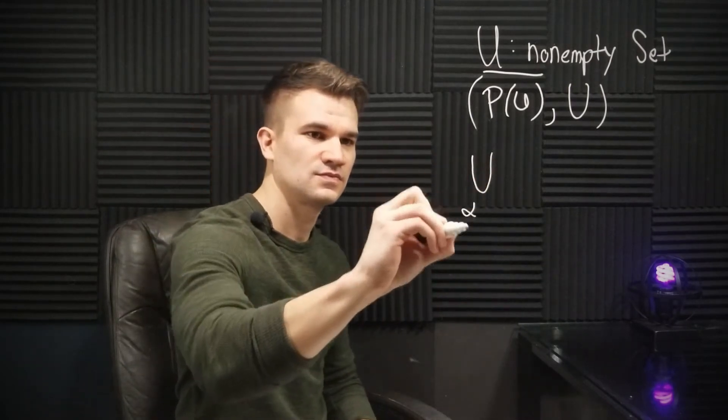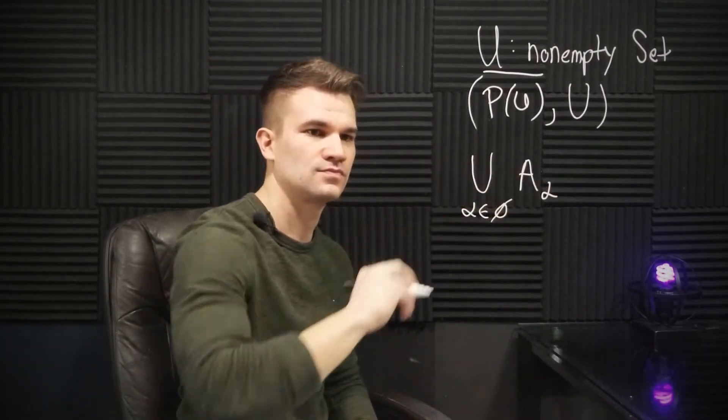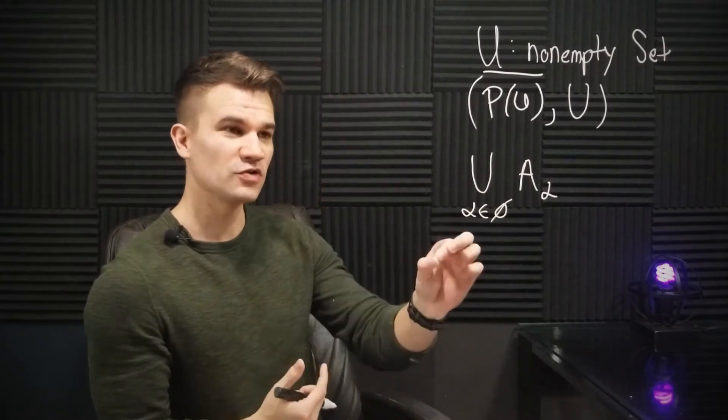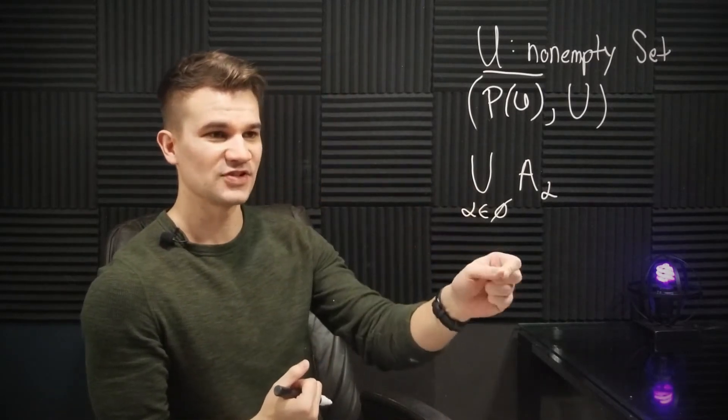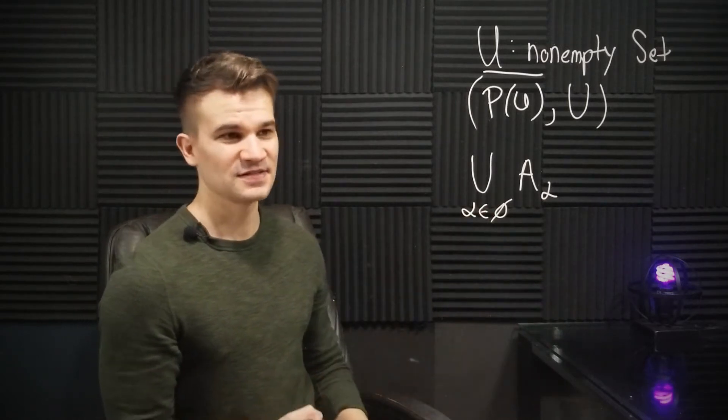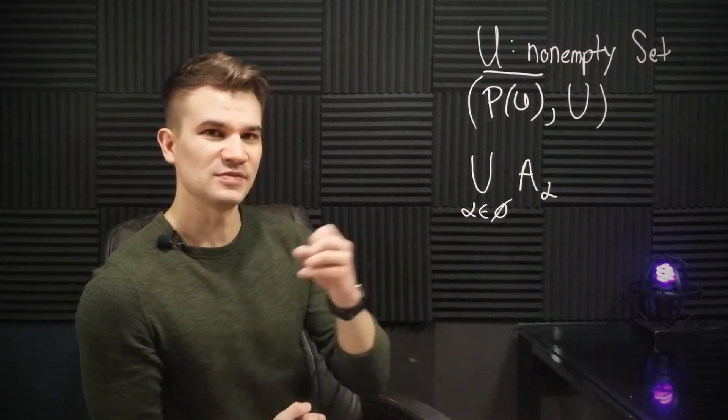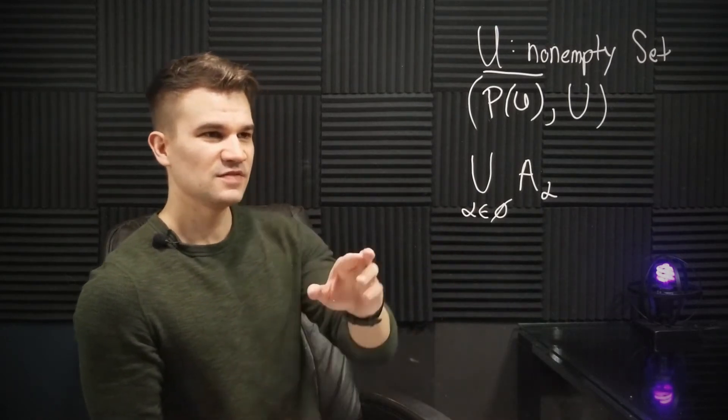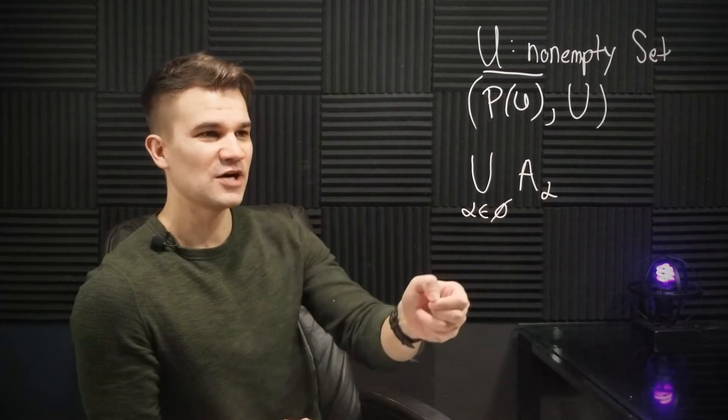Well, we can denote that like this: the union of all sets A sub alpha such that alpha is in the empty set. It's a union over an empty family of sets. So what is this union? Well, what does it mean to be in this union? To be in the union of all these sets A sub alpha, it means that you have to be in at least one of the A sub alphas.